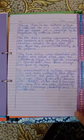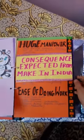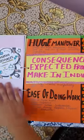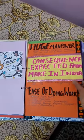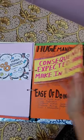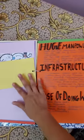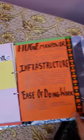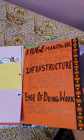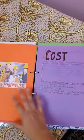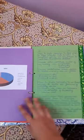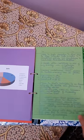After this, the consequences expected from Make in India are discussed — that includes huge manpower. Another separation sheet is used here. Infrastructure, cost of doing work, and other important data are also covered in this section.